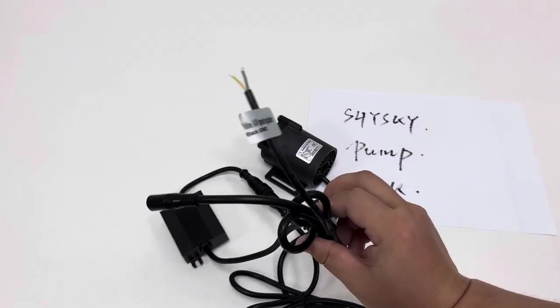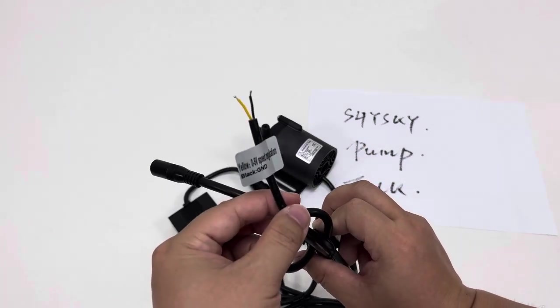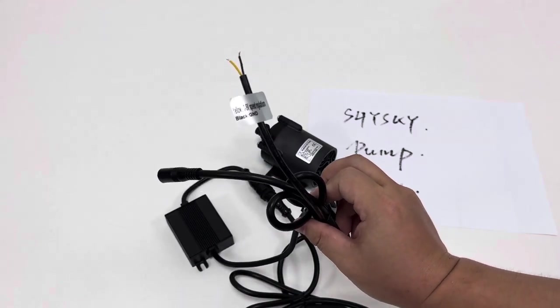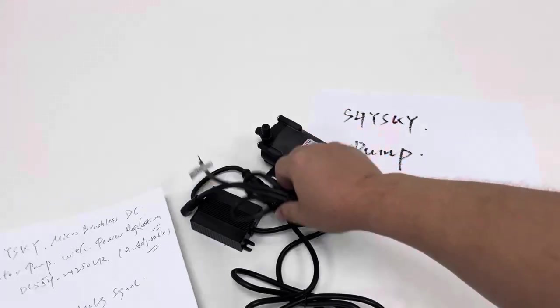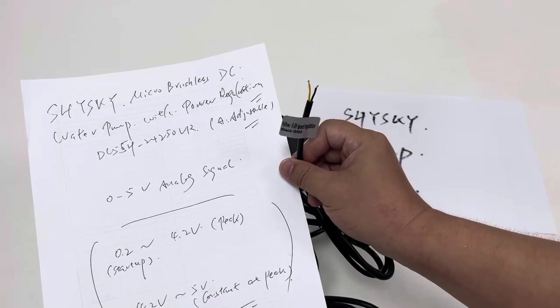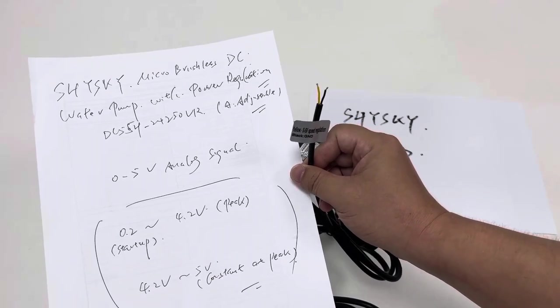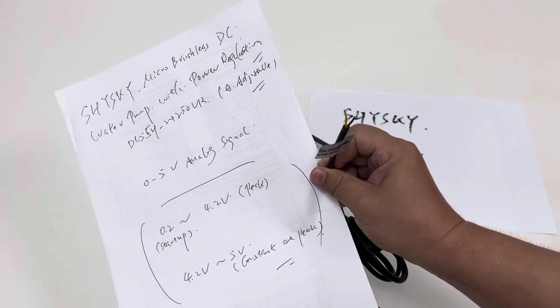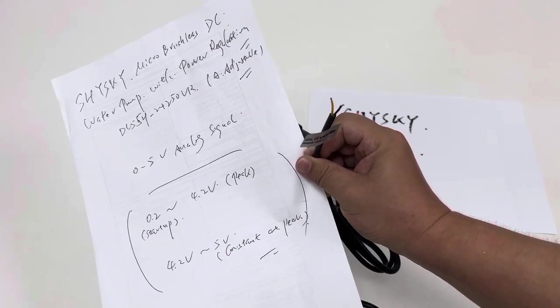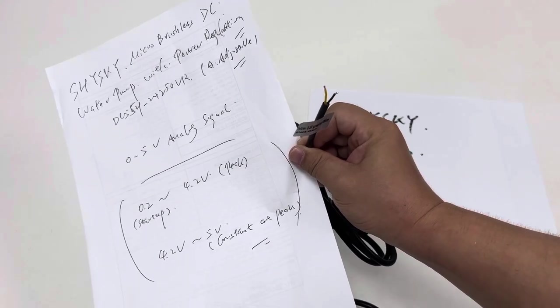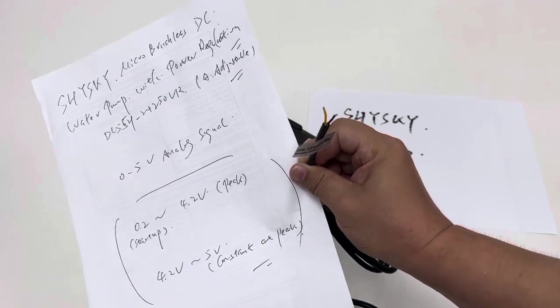Especially regarding the 0 to 5 volts analog power regulation, let's talk some more in details. As we see, this supports 0 to 5 volts analog signal control. But if we look into the details more precisely, we will find that there are three frames or phases. First,